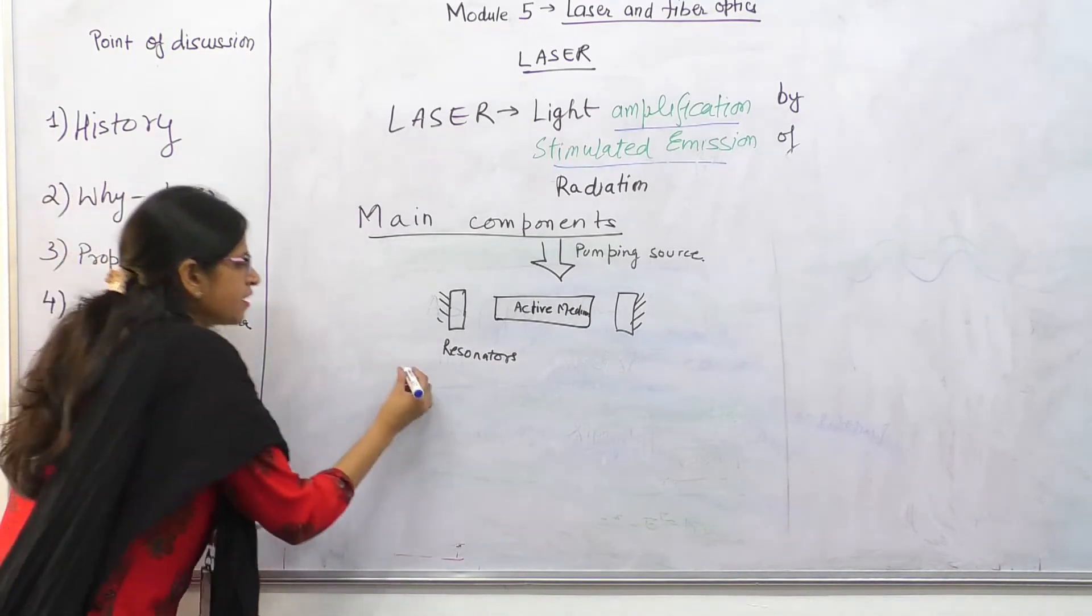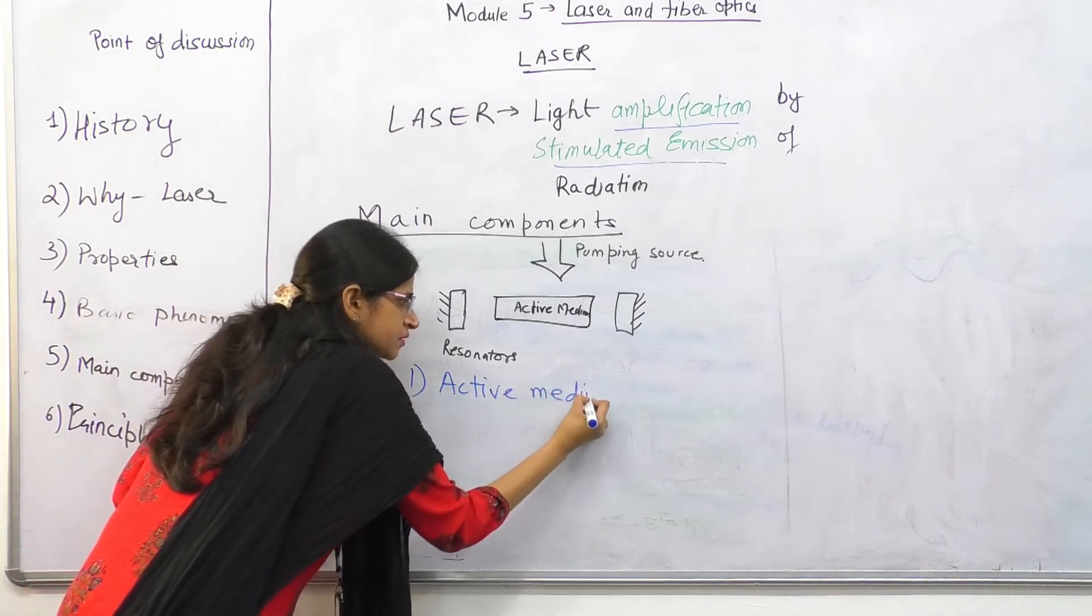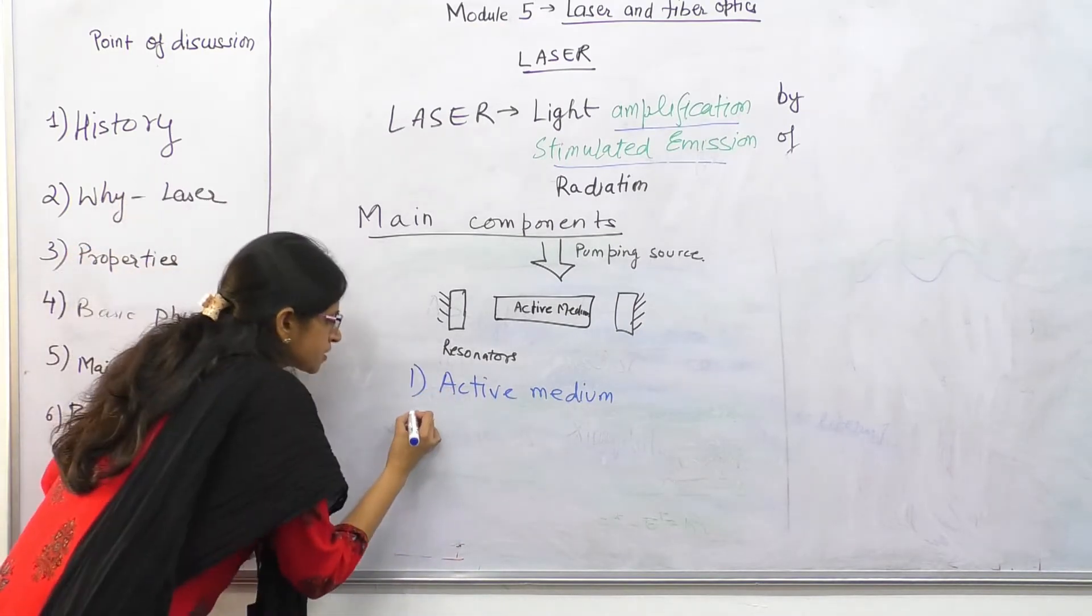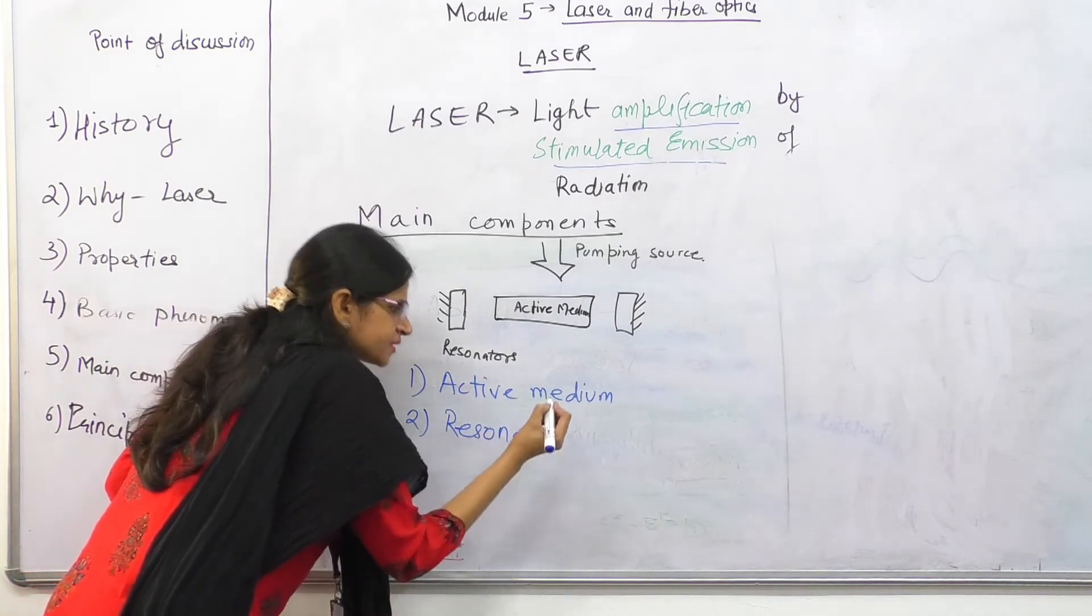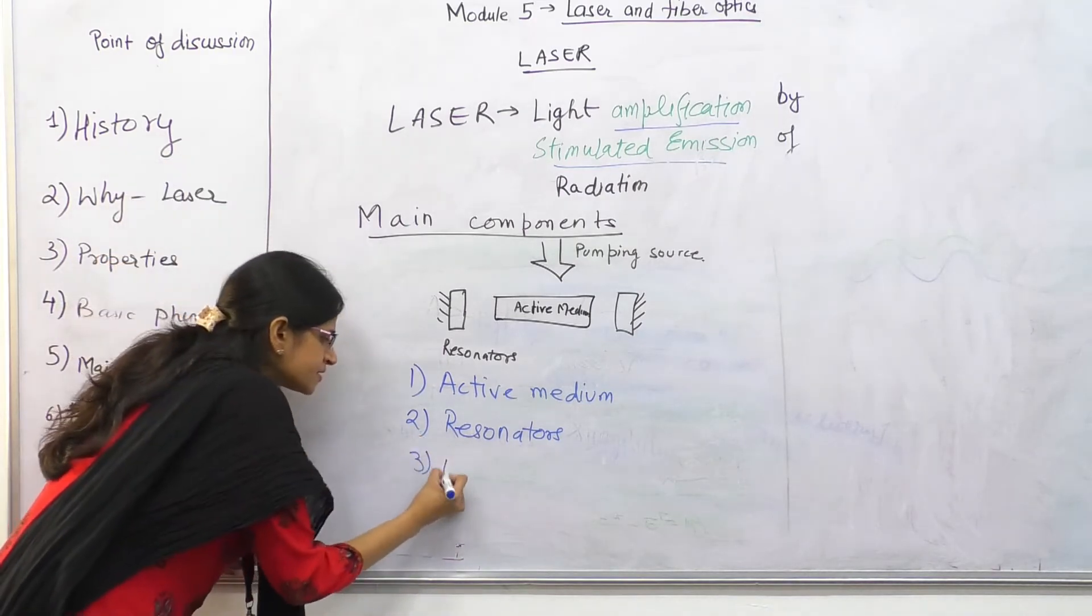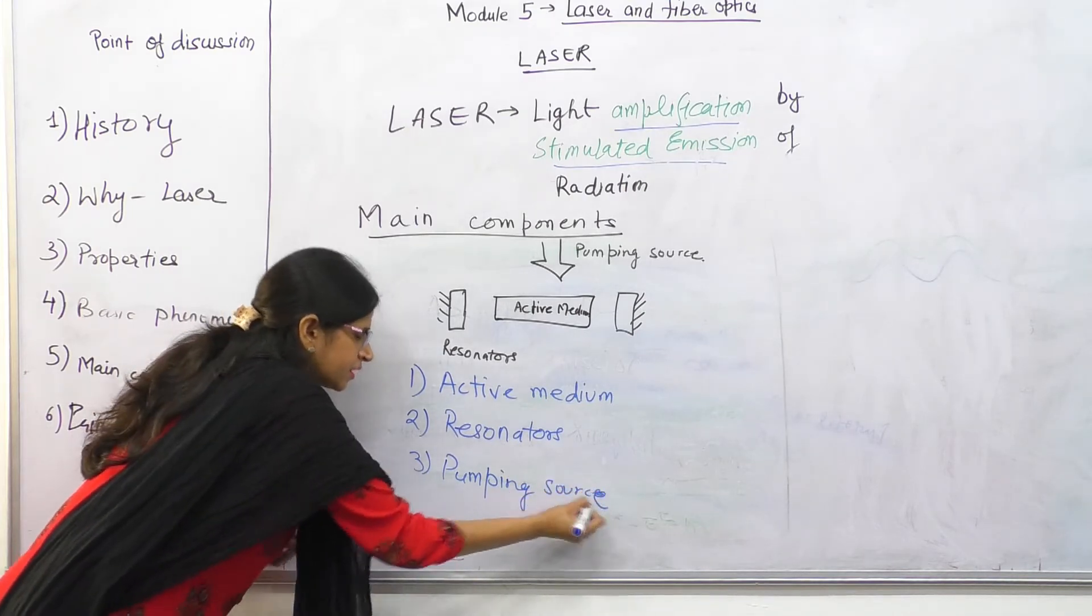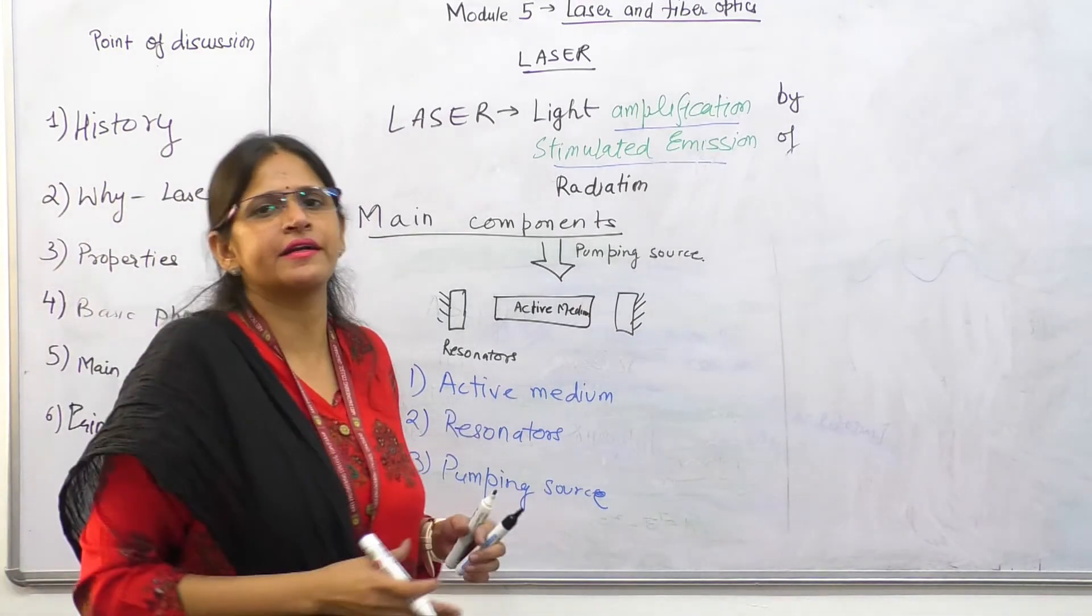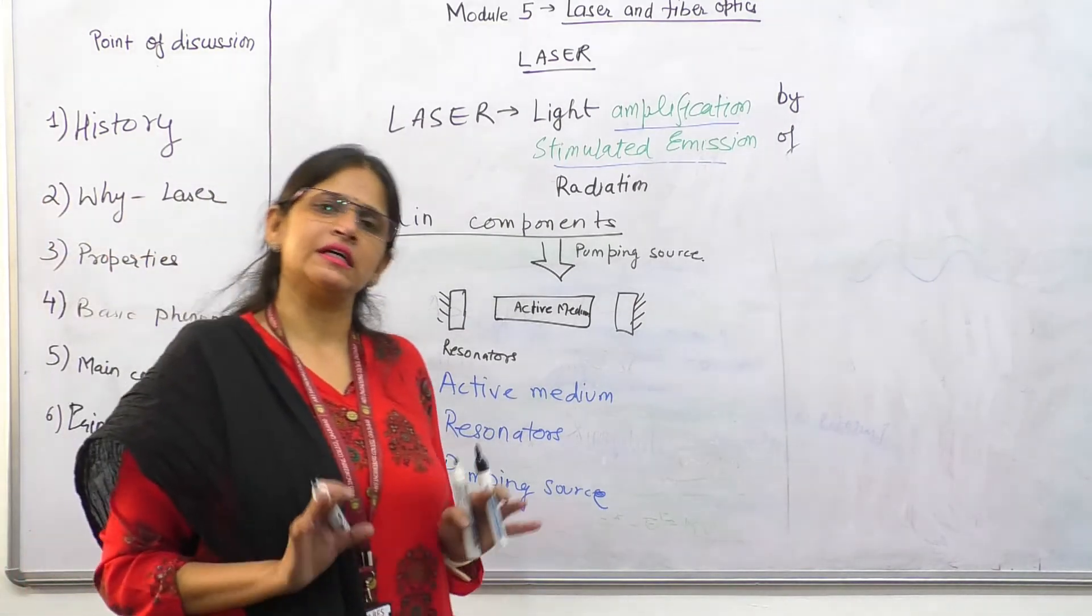So I just jot down the three components. First is active medium, the material by which the laser is been fabricated. Second is resonators, the mirrors that are used. Sometimes in some lasers, external mirrors are not required. The ends are just polished. And the third is pumping source. The number one, two, three is not deciding their priority. All the three are very important. So these are the three main components of laser.